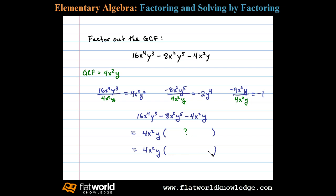And the terms of the remaining factor will be the results that we obtained after dividing all the terms by the GCF. We can write 4x squared y times the quantity 4x squared y squared minus 2y to the fourth minus 1.